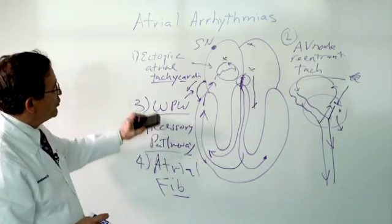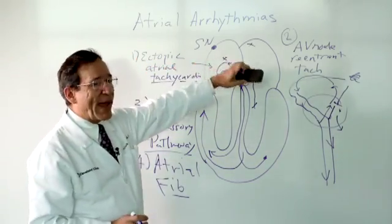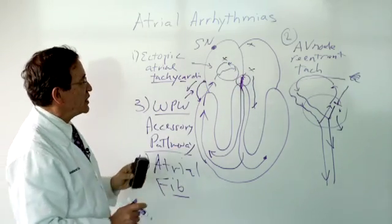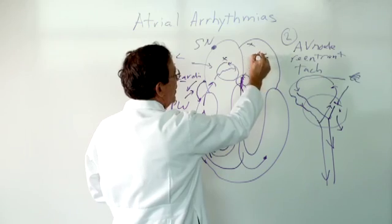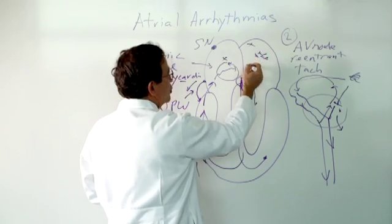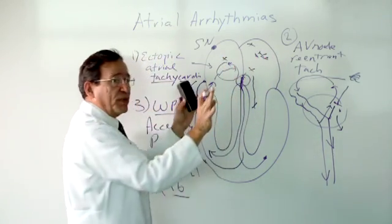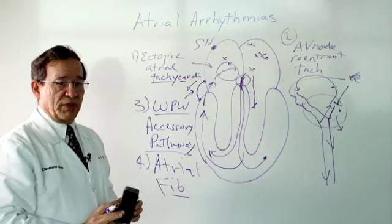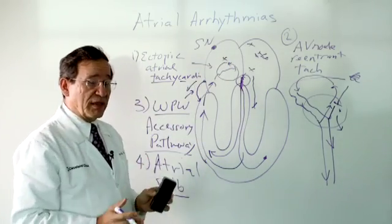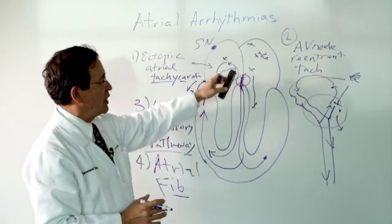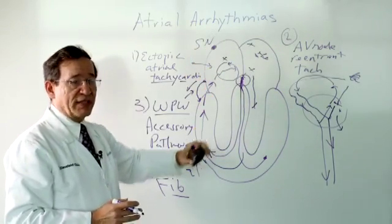Atrial fibrillation is typically started by a very rapid ectopic atrial tachycardia, but once these rapid beats are going on, firing at very rapid rates, it starts to break up into multiple different impulses in the upper chambers. This is not one site generating the impulse, but impulses spreading from multiple different sites.